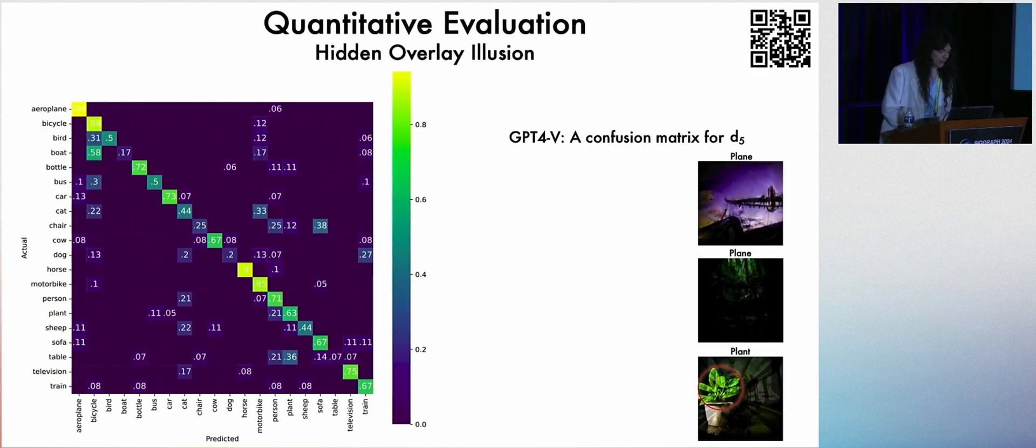And of course, we do some quantitative evaluation, where we may create a confusion matrix for these derived images over here, where the plane was basically unrecognizable, this one was just completely black, and this one was a plant. But most of the time it works well. These were specifically selected as failure cases. You can see that this diagonal matrix over here means that most of the time, GPT-4 will recognize the target prompt as what we actually wanted it to be.